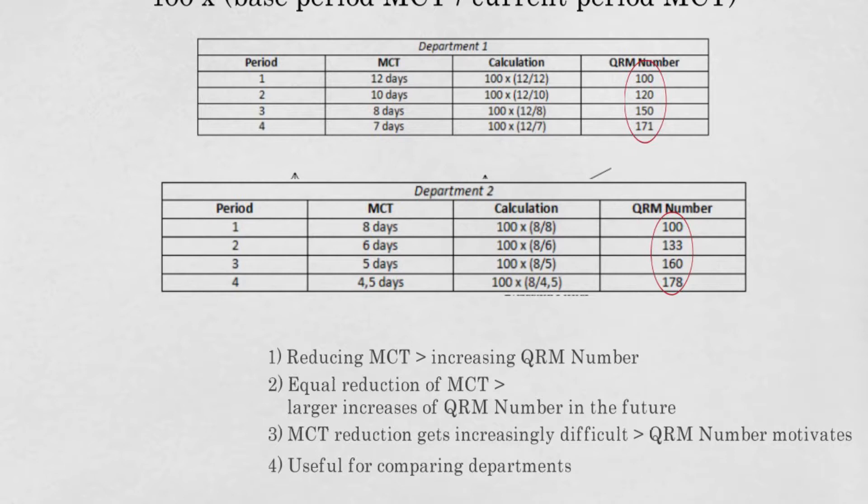The reason for this is their starting MCT of 8 days, which is of course less than 12 days and therefore influences the ratio. When we compare both departments, we could argue that in the end, department 2 did a better job.